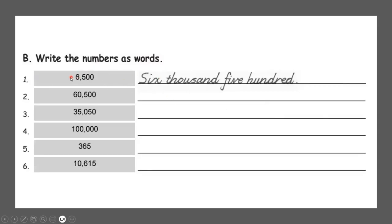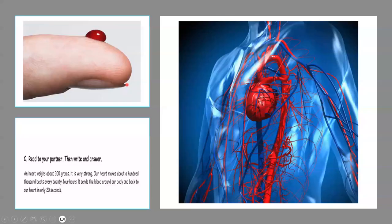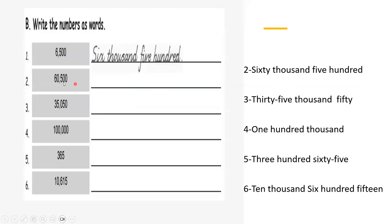Let us write these numbers. Number one: 6,500. Number two: 60,500. Number three: 65,050. Number four: 100,000. Number five: 365. Number six: 10,615.